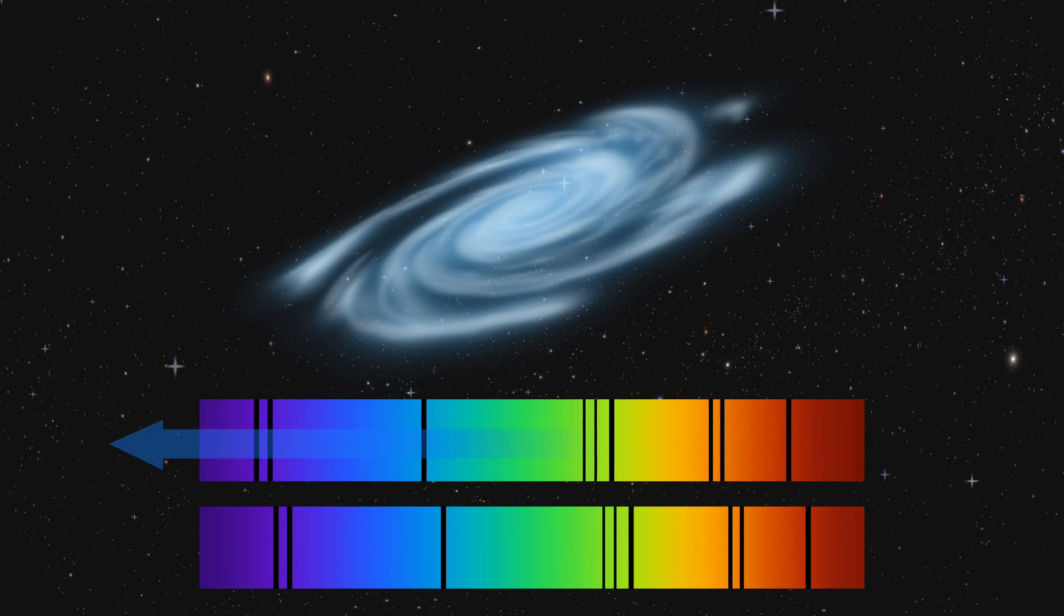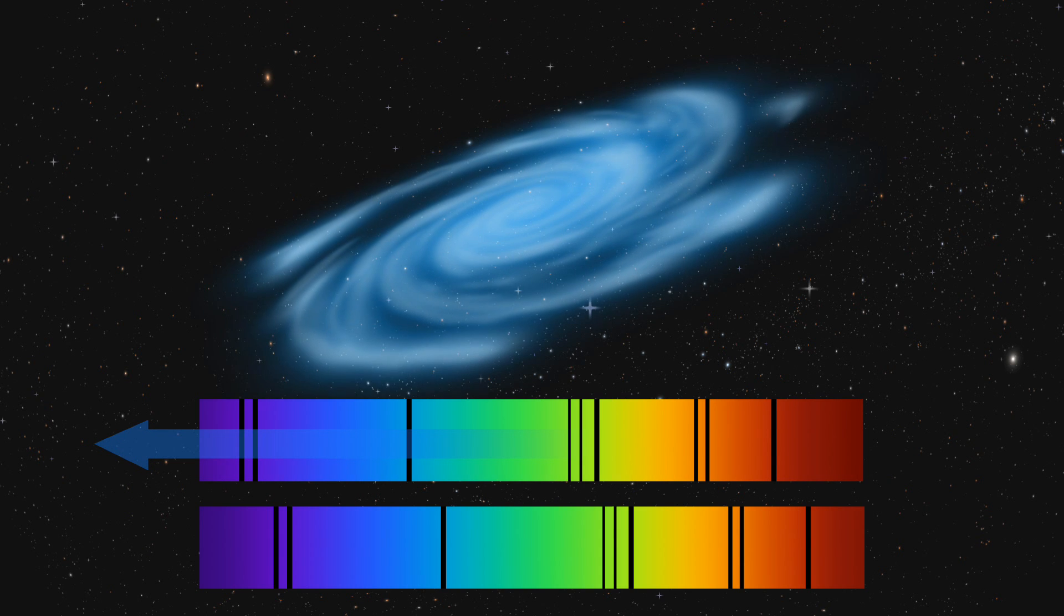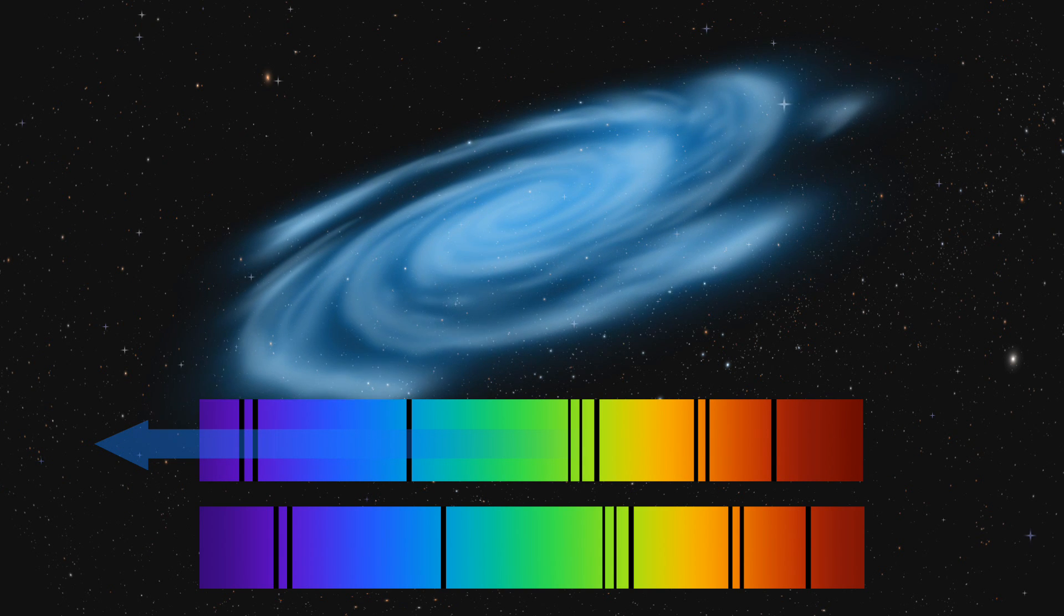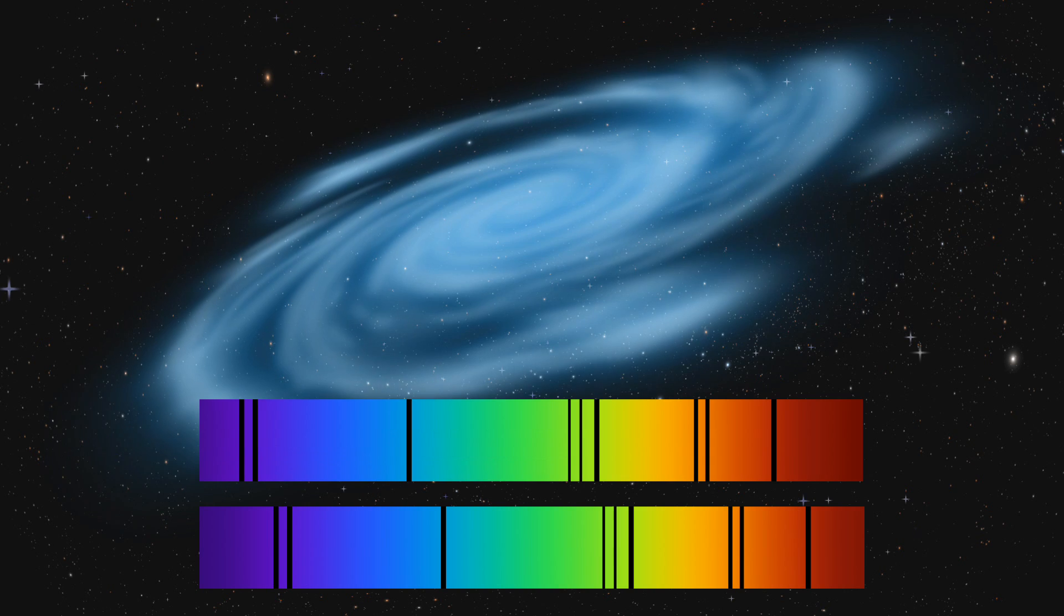If the galaxy was moving towards an observer on the Earth, the spectral lines would shift to the blue end of the spectrum. This is known as a blue shift.